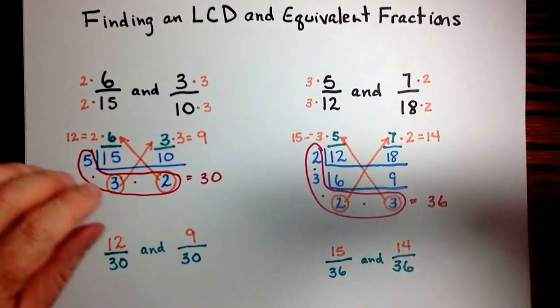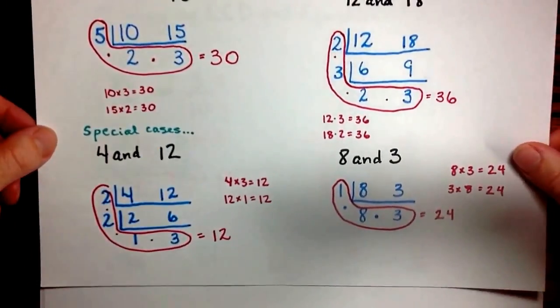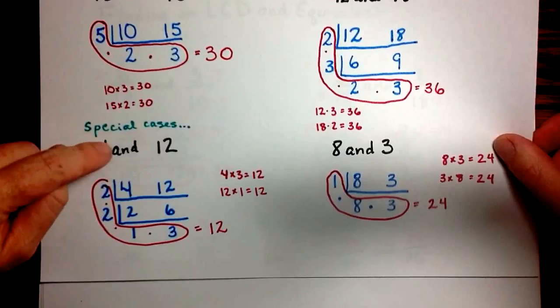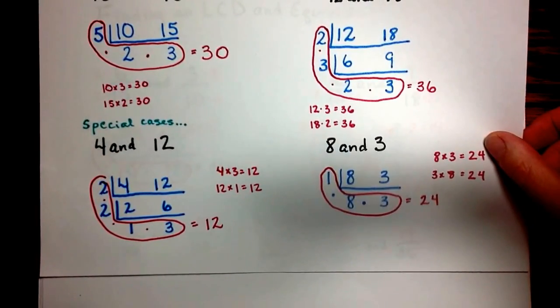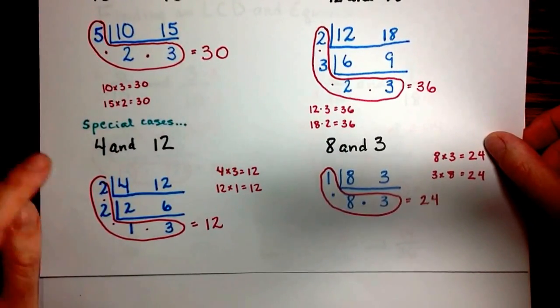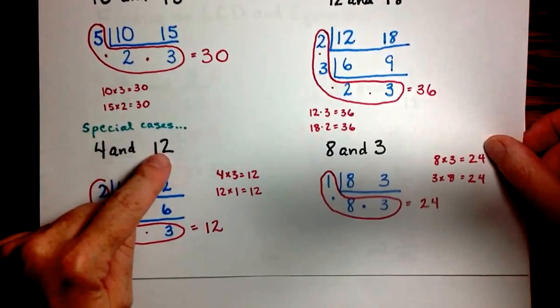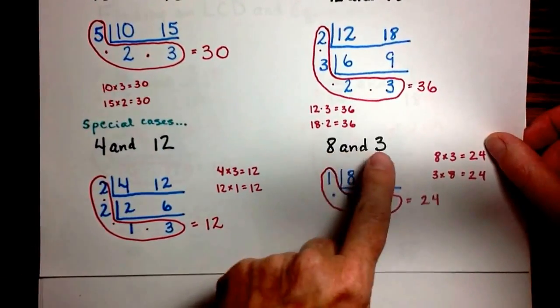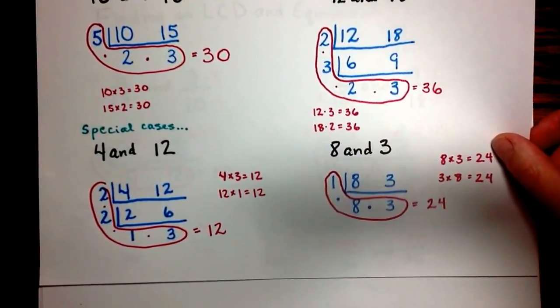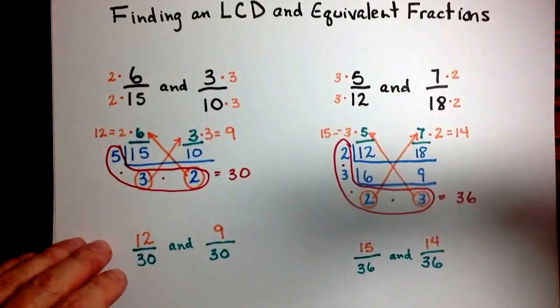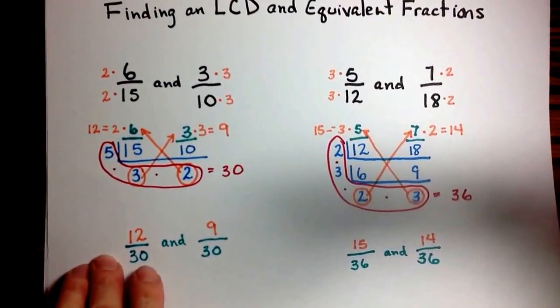When we did the original lesson, we also talked about these special cases, when the two numbers that we're finding a common multiple for, where one is either a factor of the other, or they share no common multiples. So we're also going to look at some fractions with those same numbers.